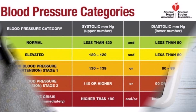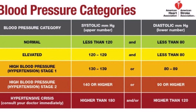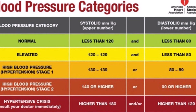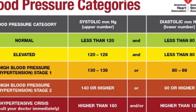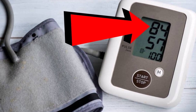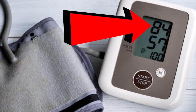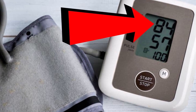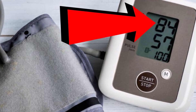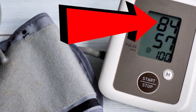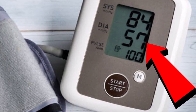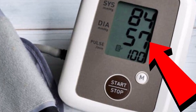For low blood pressure, there's no set systolic or diastolic numbers, but most medical experts consider it to be a systolic number less than 90 and a diastolic number less than 60.